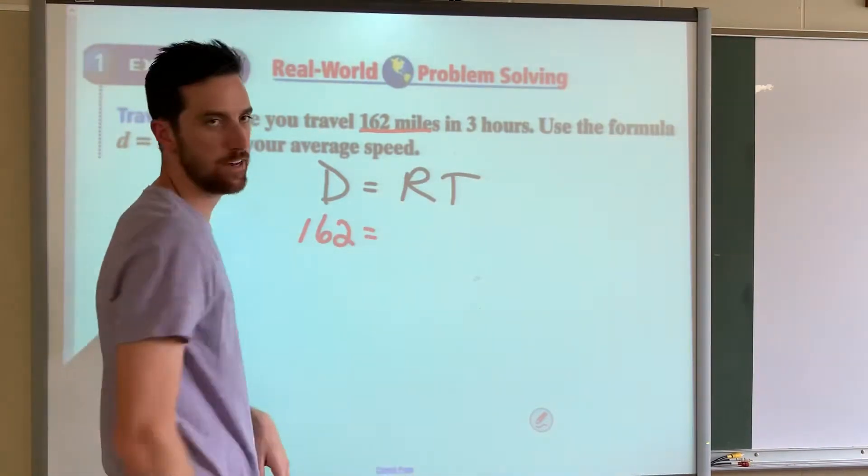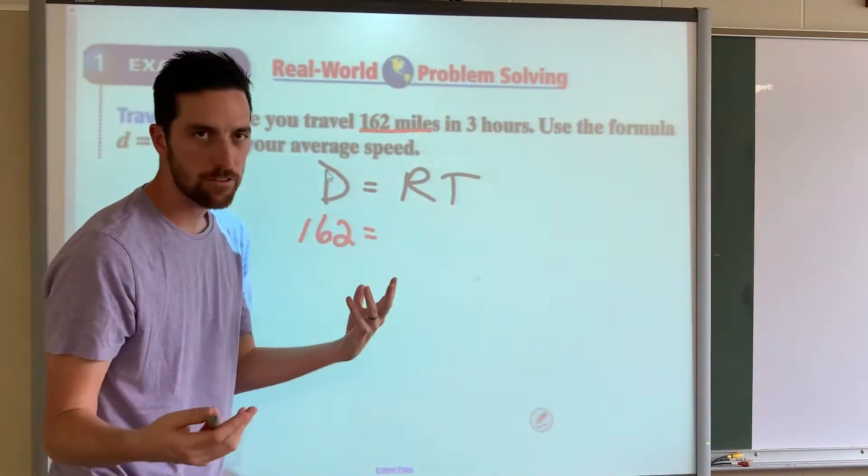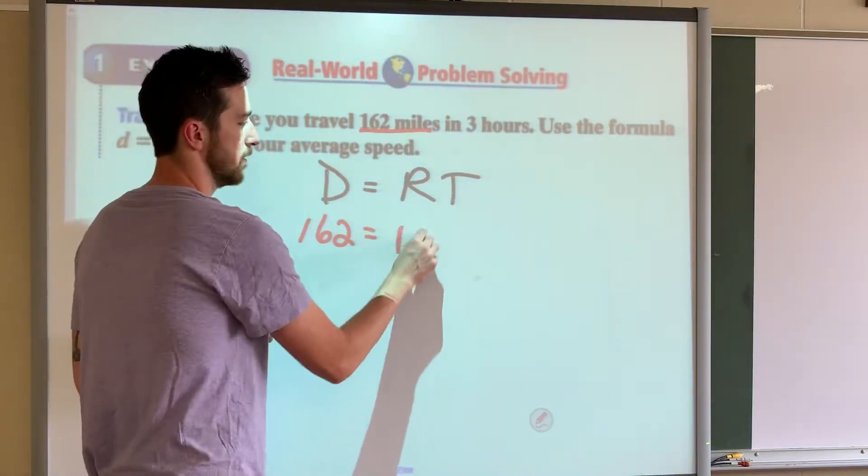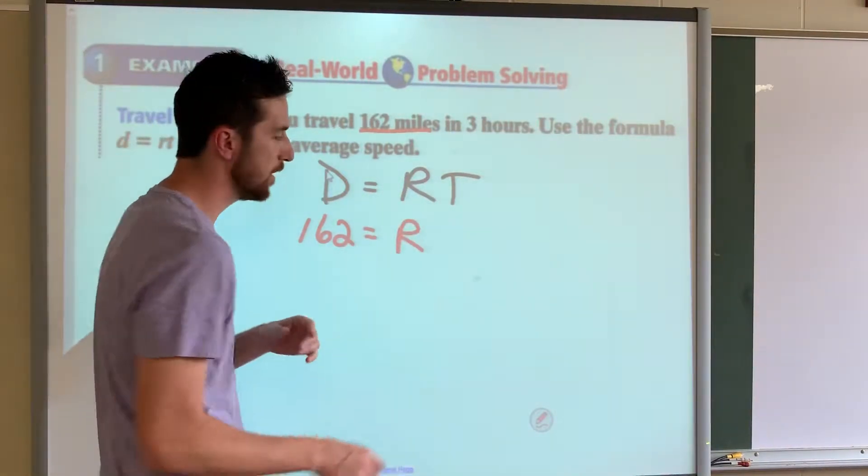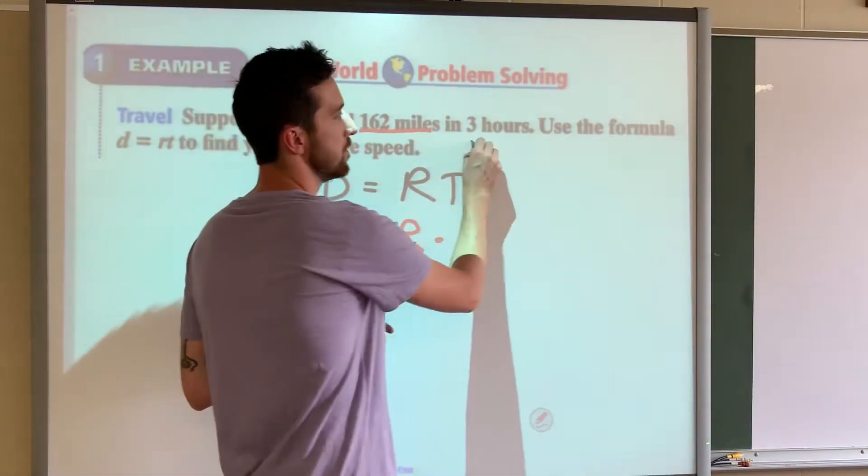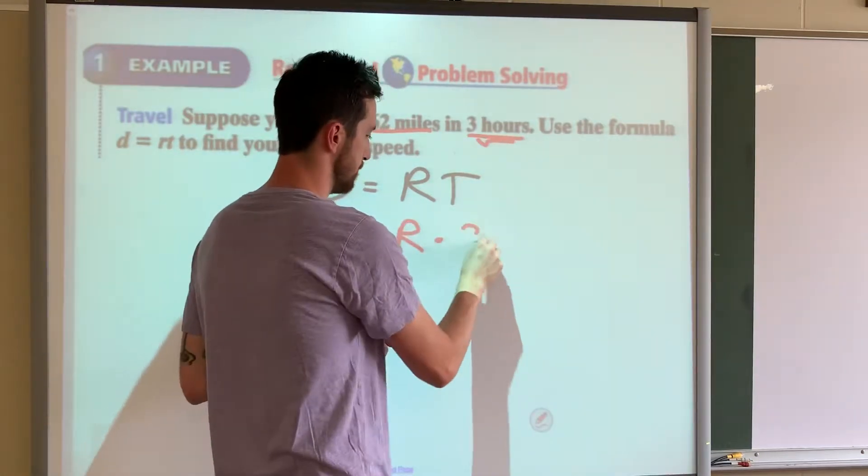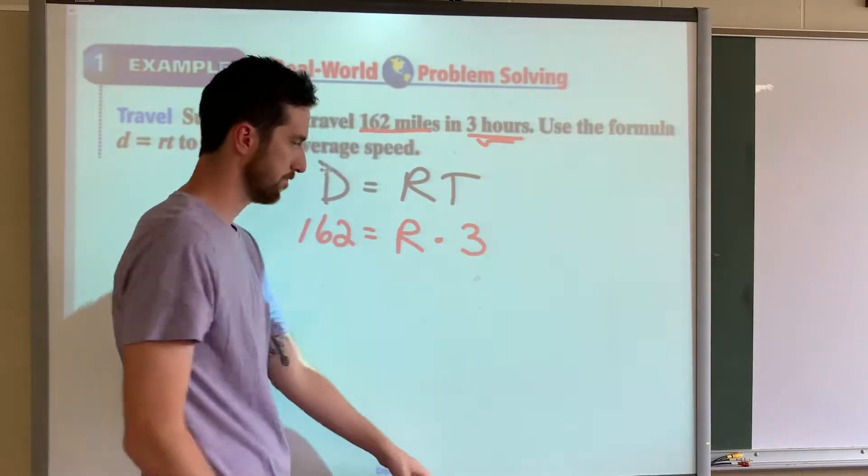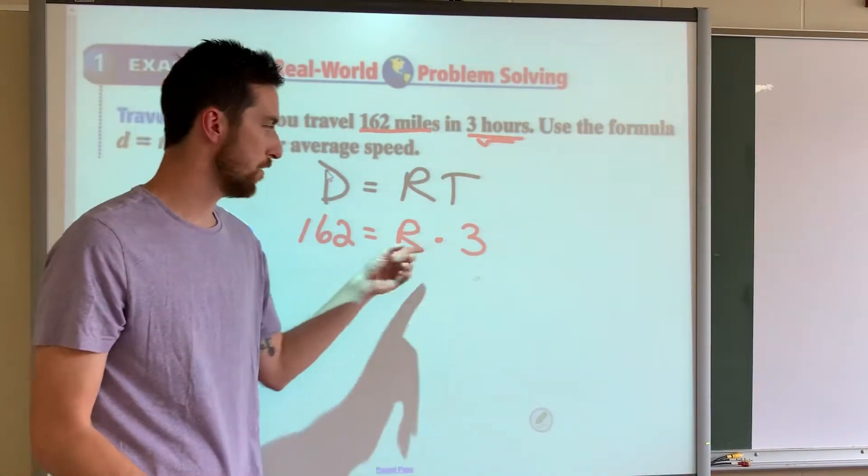We are looking for the rate, which we're multiplying by the time. The time was three hours. So now if we want to go backwards, R times three—if I don't want that three, I use my inverse operation.